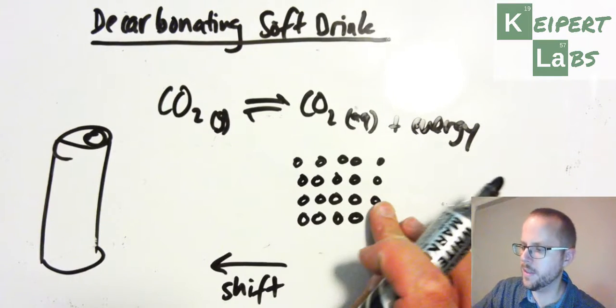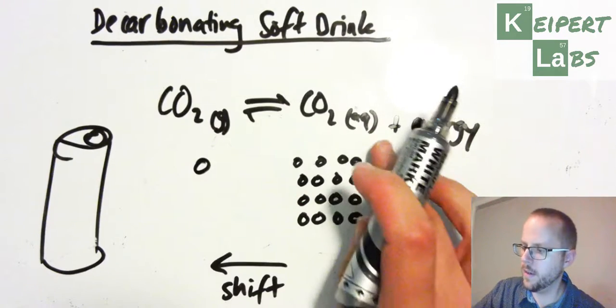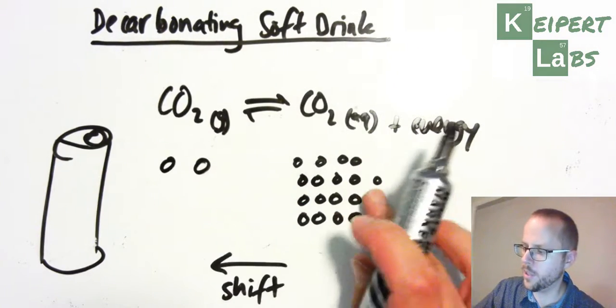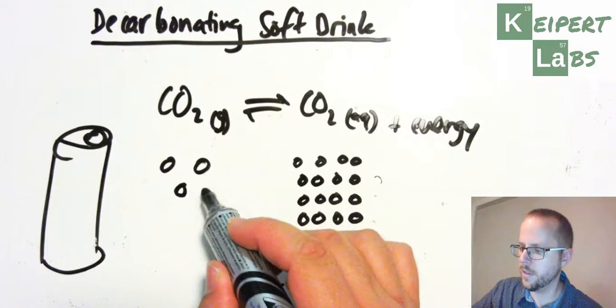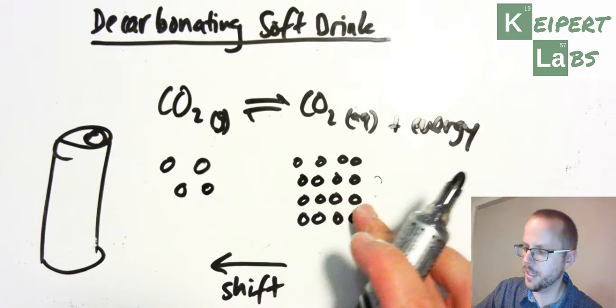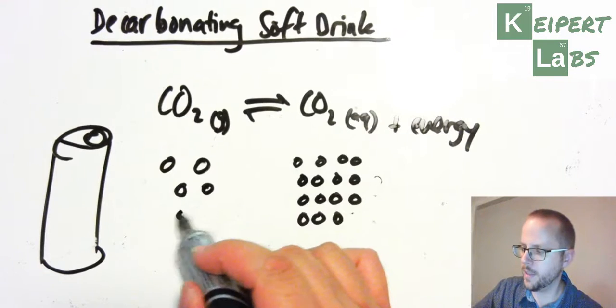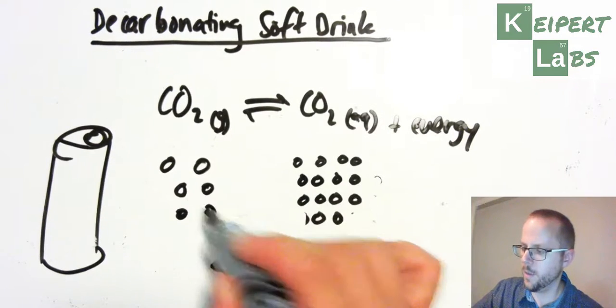So we're going to take some of this, and put it over here. So, we're trying to partially counteract that change, as predicted by Le Chatelier's principle. Now exactly which ones we take out is essentially random.